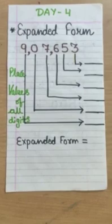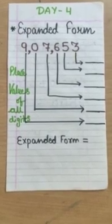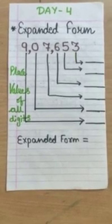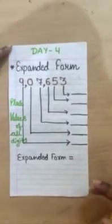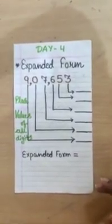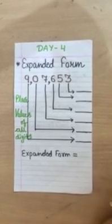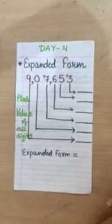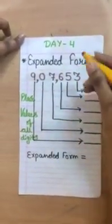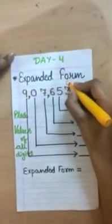So, to write any number in its expanded form, we will take the help of place values of all the digits. To write the number in its expanded form, first we will write place values. Before writing place values, we will write the place of every digit. Like 3 is at 1's place,